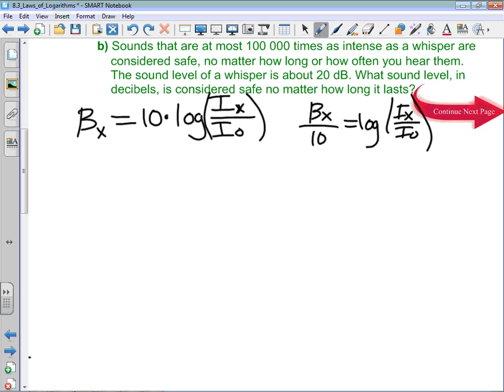When we switch to exponential form, I can say that IX over I0 is equal to 10 to the power of the decibel reading of sound X divided by 10. The reason why that's so much more useful is it actually allows us to solve questions where it talks about relating the intensity of two different sounds, which is what part A is about.